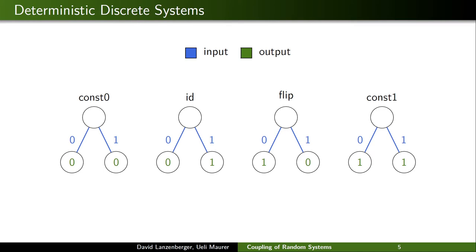Here we see the four single-query DDSs on the domain and codomain of bits, so the set {0, 1}. For example, the system 'flip' is the system that if you query it with 1, the answer is 0. These are single-query systems, and more generally if we had more queries, the tree would go deeper. Of course, we want to have probabilistic systems, and this is not yet captured.